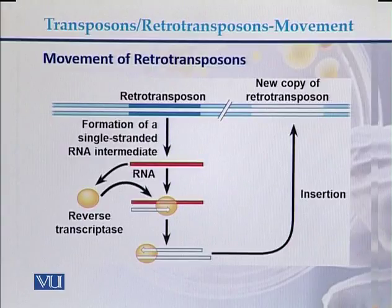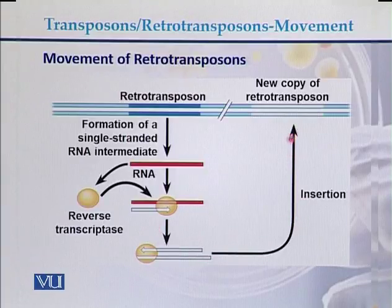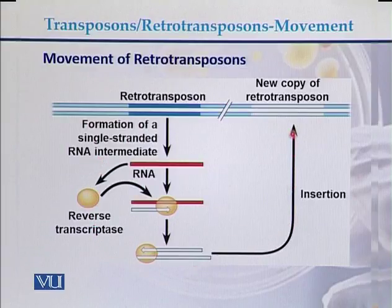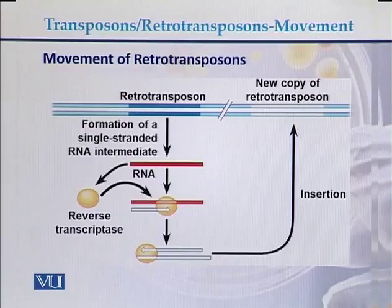In the case of retrotransposons, if a retrotransposon on the genome is first converted into RNA, and then with the help of reverse transcriptase the RNA is converted into DNA, and then that DNA is integrated into another location of the genome, it is called a retrotransposon. The intermediate for retrotransposon movement is RNA — a single-stranded RNA acts as the intermediate, is converted into DNA, and that DNA is inserted into another location.